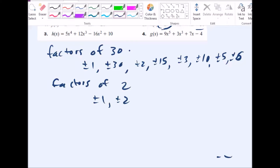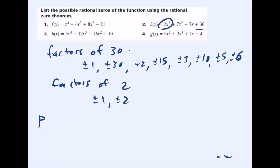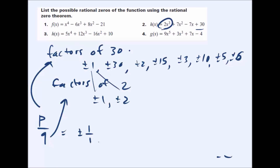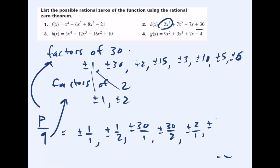When combining them using p over q — factors of 30 divided by factors of 2 — you actually have to do everything twice: divided by 1 and divided by 2. So you get plus or minus 1 over 1 and plus or minus 1 over 2, plus or minus 30 over 1 and plus or minus 30 over 2, continuing through all combinations, giving values like plus or minus 15 over 2, and so on.